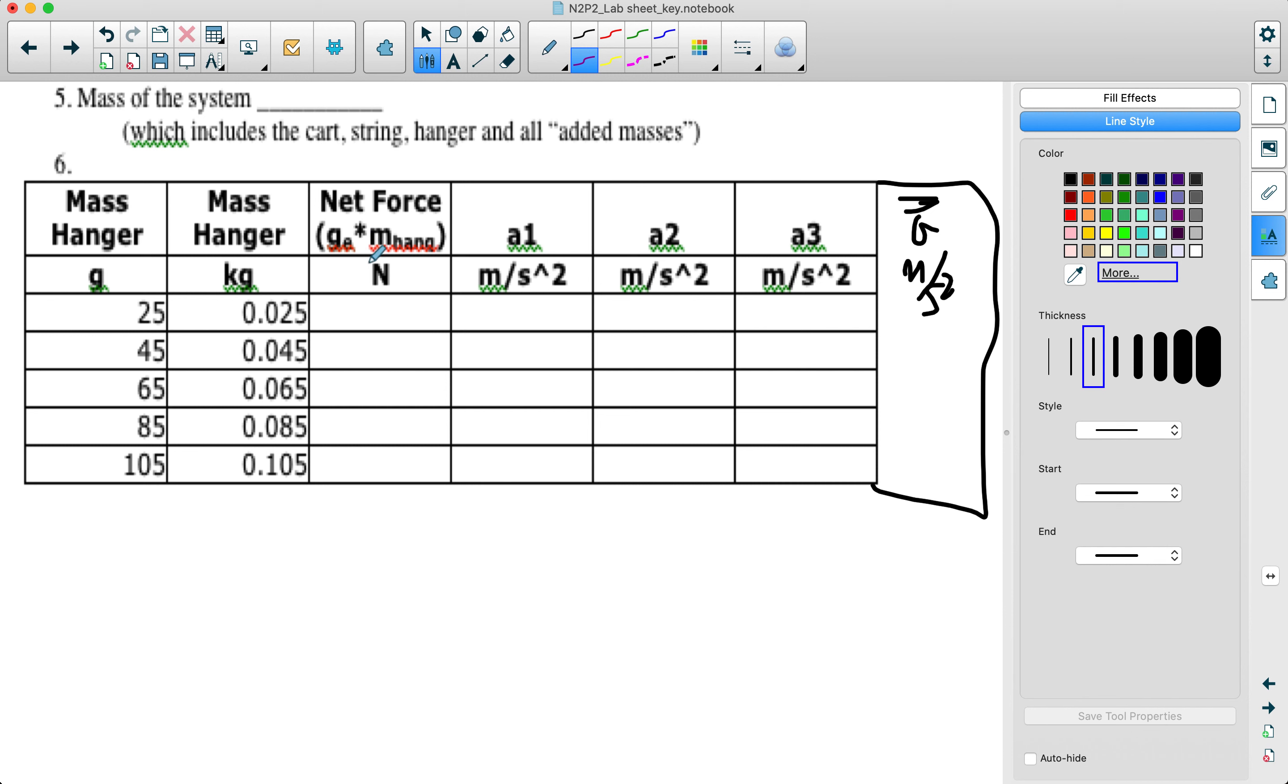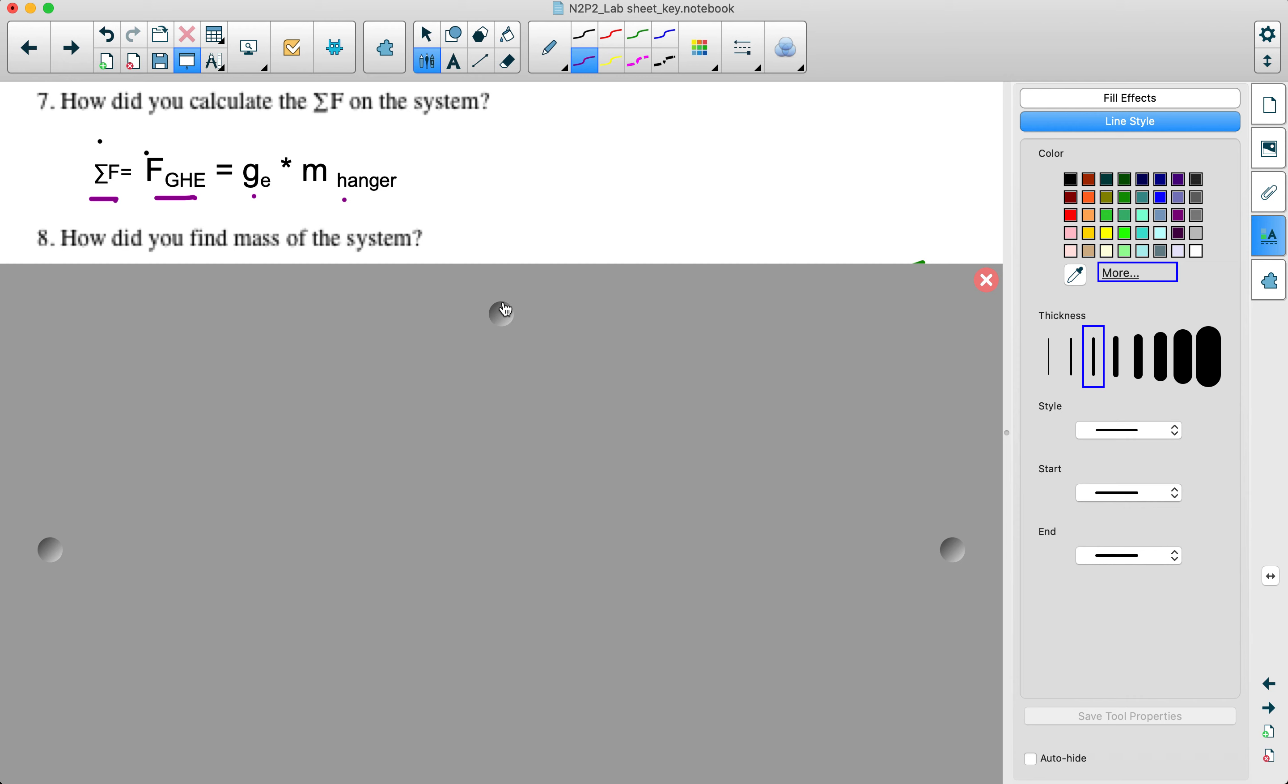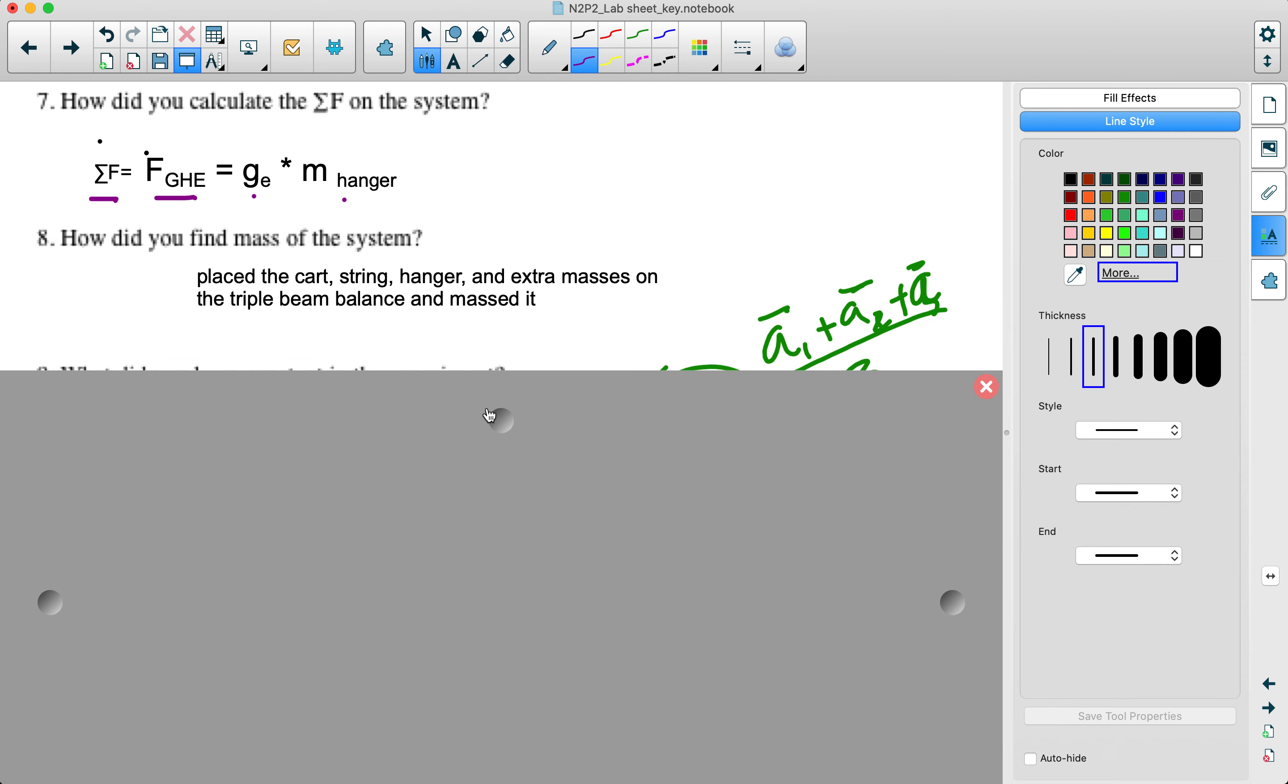You should have calculated your net force in this column using the gravitational field strength constant on the Earth, 9.81 newtons per kilogram, times the mass of the hanger, and you had to use the mass of the hanger in kilograms. Then you should have added your three accelerations you collected, divide by three to find your average acceleration. How did we calculate the net force on the system? You've got the net force is literally the weight of the hanger, so you do 9.81 newtons per kilogram times whatever the mass of your hanger was. How did we find the mass of the system? We placed the cart string, hanger, and extra masses on the triple beam balance, and we massed it.